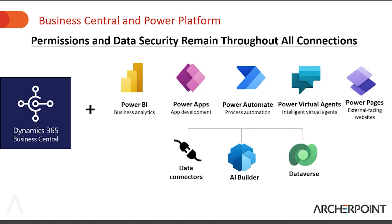A note on permissions and data security: when accessing Business Central through Power Apps or external sources, the security and permissions remain the same. If you're using a data connector or web service, that web service is its own user, so you want to give it only the permissions you'd grant anyone using that connection. If a user is accessing Business Central through Power BI or Power Automate, it uses the same license and connection — so they can't look at things like HR records or sensitive financial information unless they already have access to that in Business Central.